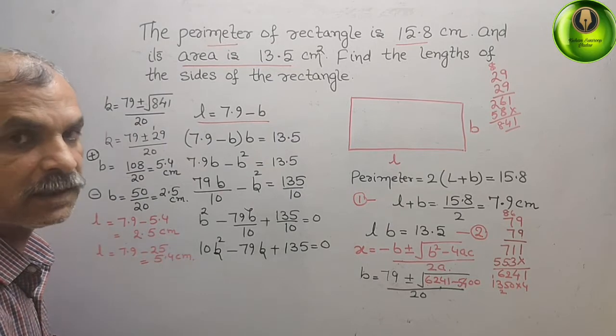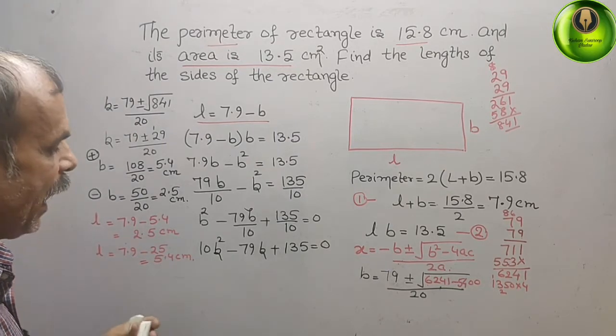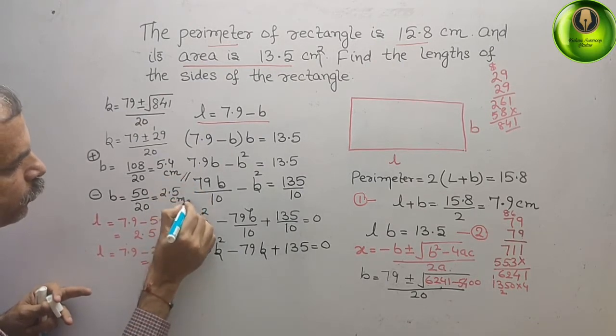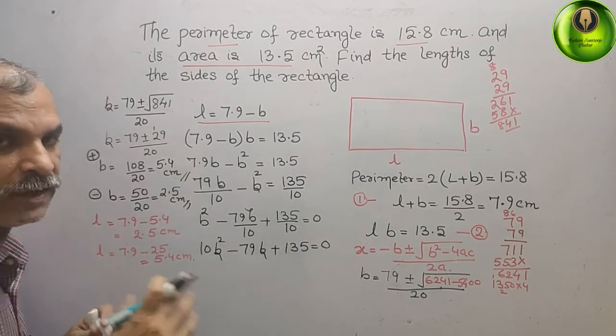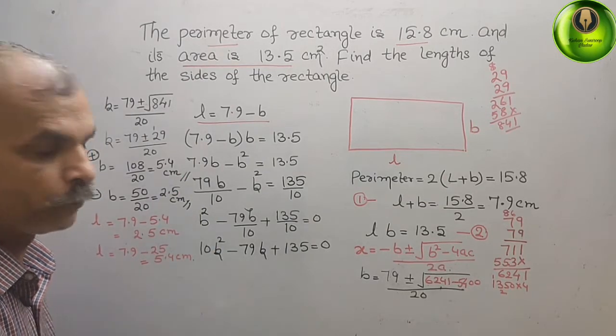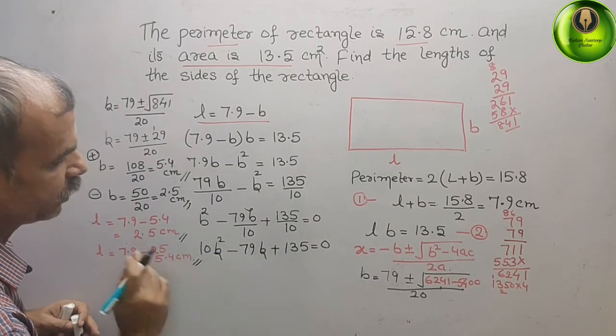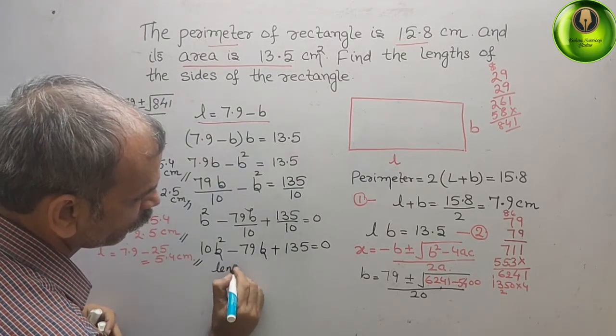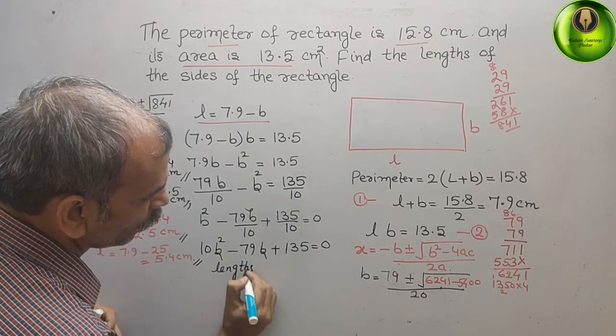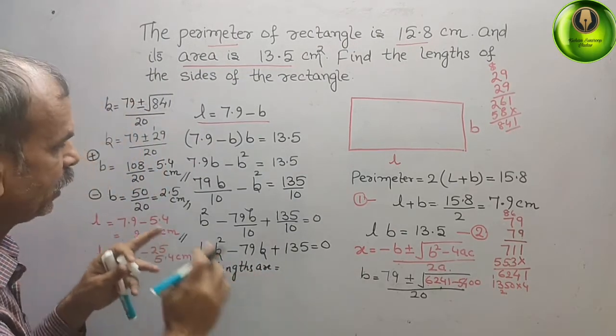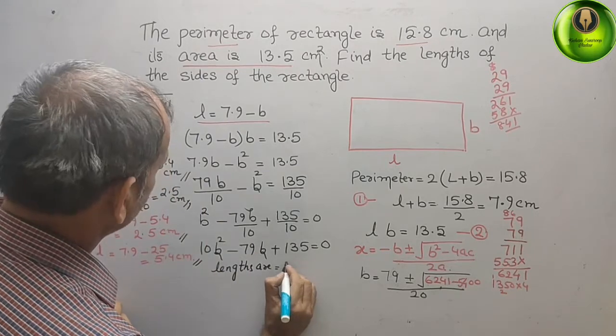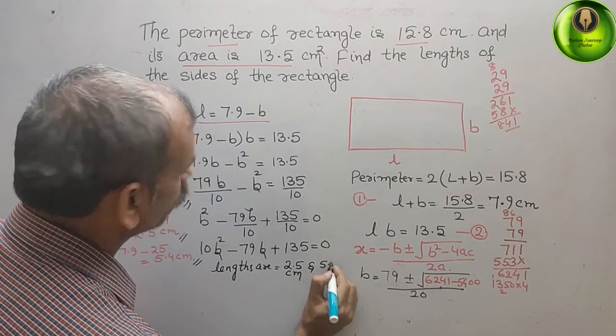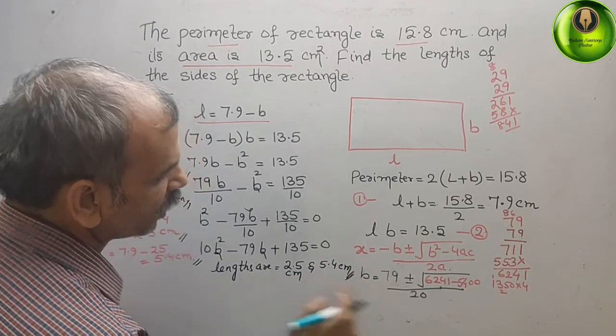So, what does it mean? It means that L and B are your these values, these two values. But, we don't know which is L, which is B. Same values, you will get here. Therefore, the lengths are, you will write single, that is, 2.5 centimeter, and 5.4 centimeter. So, this is your answer.